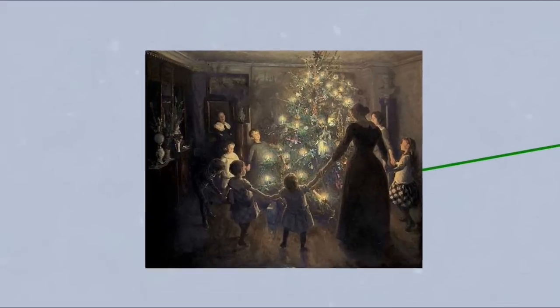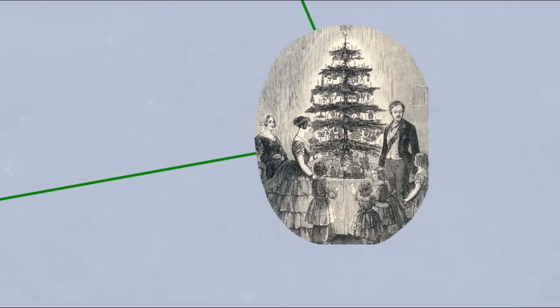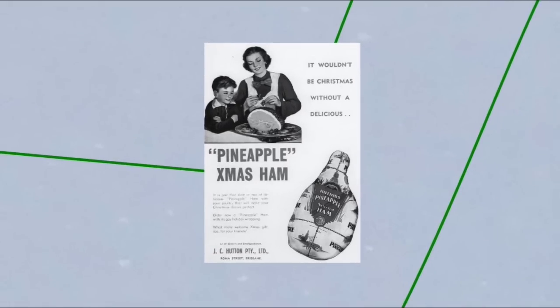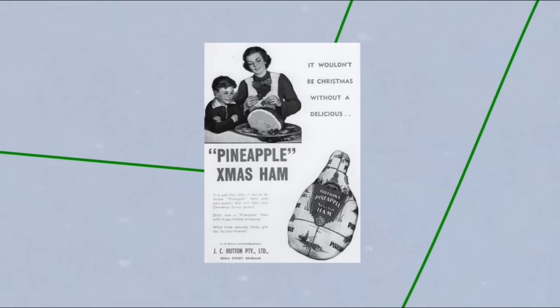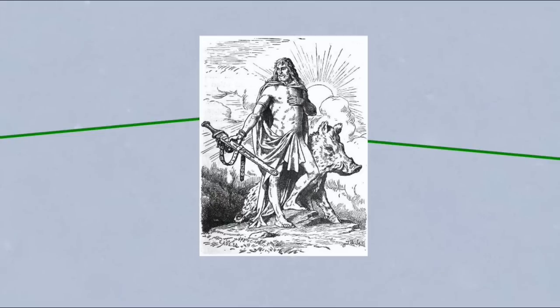Christmas trees too seem to come from Germanic pagan roots, but aren't from that continuous English tradition. The Christmas tree was popularized much later in the Victorian period by Prince Albert, the German-born husband of Queen Victoria, after having been imported a little earlier by other German-born members of the British royal family. And then there's the traditional Christmas ham, a custom that goes back to the Germanic Yule boar. The boar was associated with the Norse fertility god Freyr, and it was customary to sacrifice a boar as part of the pagan Yule celebrations to ensure fertility in the coming year.